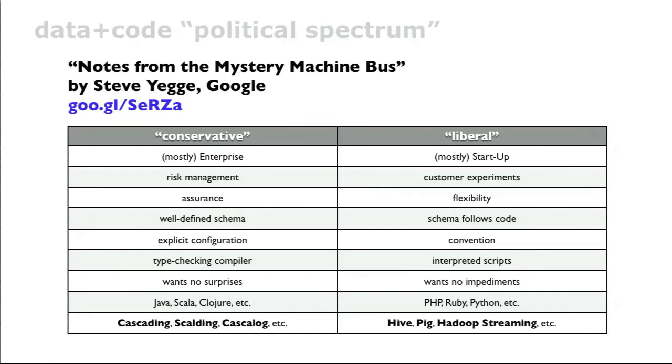I want to throw out something from Steve Yegge. How many people have read Steve Yegge's stuff? All right, good. Steve Yegge is at Google and he came up with this one article that's intentionally supposed to be controversial. The idea is he's proposing a political spectrum in programming environments. On one side you've got the conservative end of the spectrum, which is typically enterprise, not always, but you're more interested in assurance, making sure your apps run correctly. Whereas on the other side is a more liberal programming environment where you're more interested in having the flexibility to just try things and see what sticks.